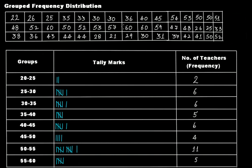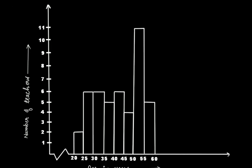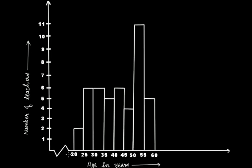The histogram for this data can be drawn like this. Here we have the histogram. On the x-axis we have age in years, and on the y-axis or the vertical line we have number of teachers.